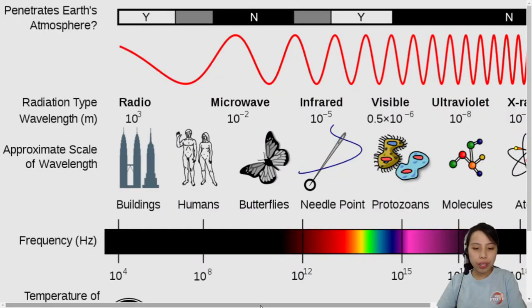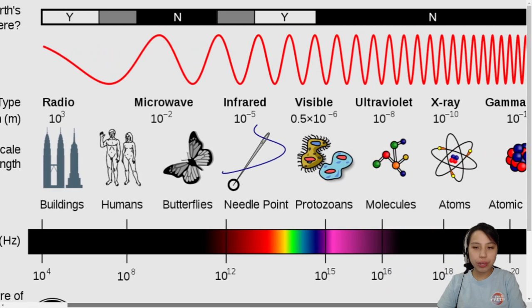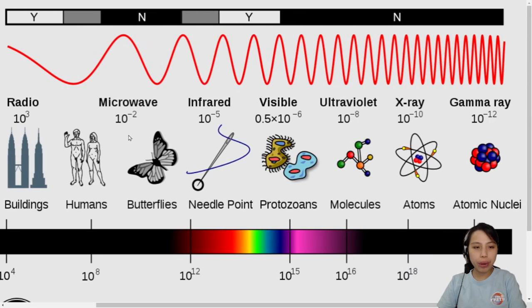It's generally quite accurate. So we are going to the high-frequency zone. Where is microwave? Microwave here is 10 to the negative 2. X-ray is about 10 to the negative 10.